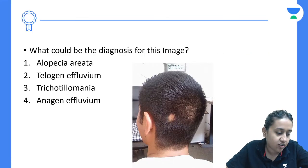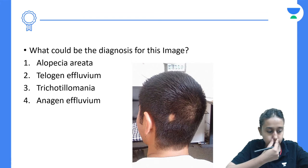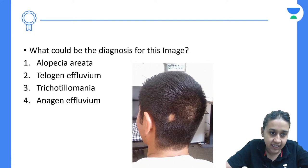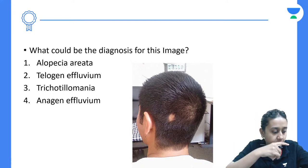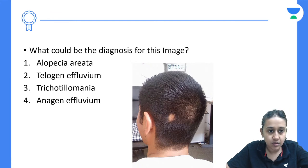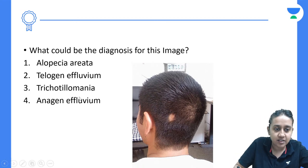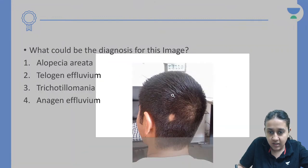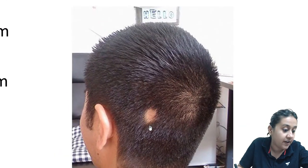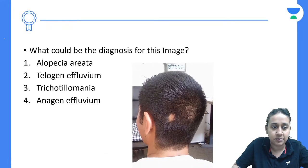Next question: what would be the diagnosis of this image? Options are alopecia areata, telogen effluvium, trichotillomania, or anagen effluvium. You can see a smooth circular patch with complete loss of hair. The underlying skin is non-erythematous and non-scaly — this is alopecia areata.